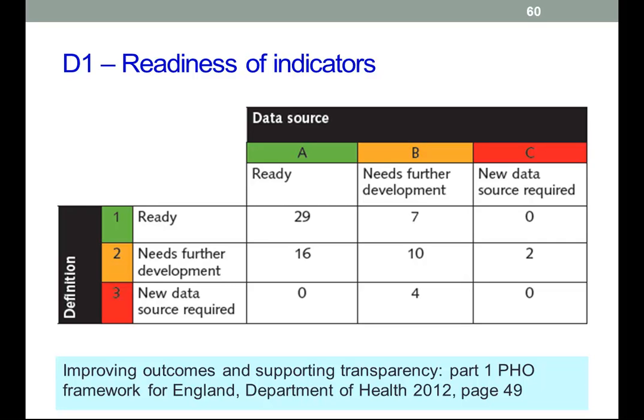They've tallied up the indicator readiness for domain 1. Those in the green area are ready. Those in the mustard-coloured area, not so much. Those in the red area require a new data source, which is obviously quite a big step. In the case of domain 1, almost all of the indicators are either in the green or mustard, apart from that for social connectedness.